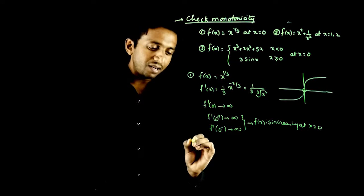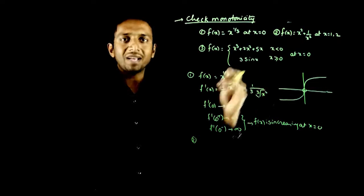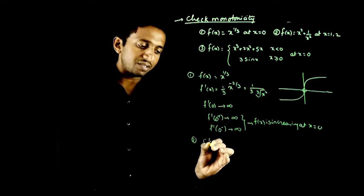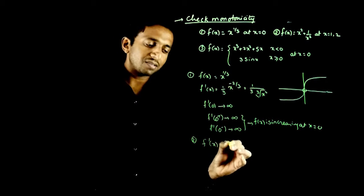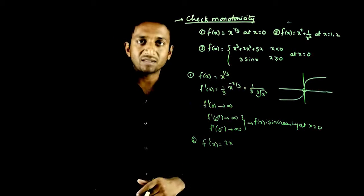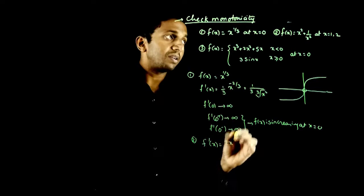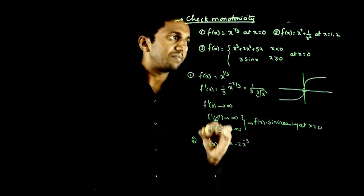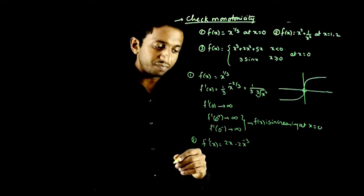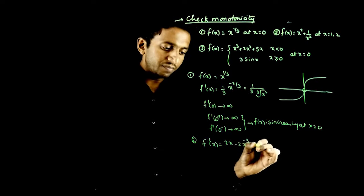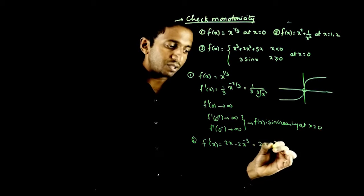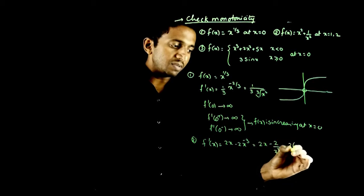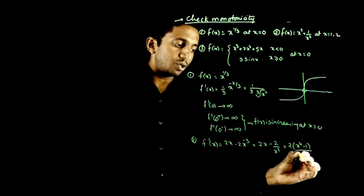If you draw the graph, the cube root of x has a vertical tangent at that point, but going left and right the function is going up. Hence the function is increasing. Next, let us look at f(x) = x² + 1/x². Its differentiation: f'(x) = 2x + d/dx(x^(-2)) = 2x − 2x^(-3), which equals 2x − 2/x³.